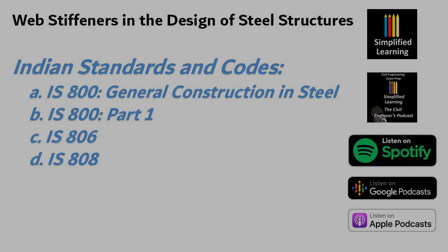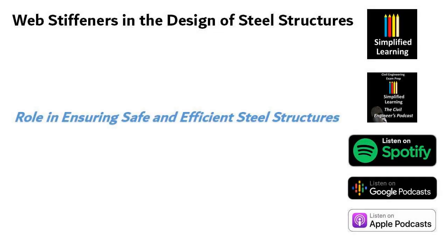Now let's talk about the role in ensuring safe and efficient steel structures. Web stiffeners play a critical role in ensuring the safety and efficiency of steel structures in the Indian context. By enhancing the shear resistance of beams and girders, web stiffeners prevent premature failures and potential collapses. This is particularly important in high-rise buildings, bridges and industrial structures, where the consequences of a failure can be severe in terms of human lives and economic losses. Additionally, the proper design and installation of web stiffeners contribute to overall structural stability, reducing the risk of excessive deflection and structural deformations.